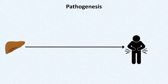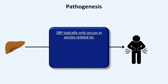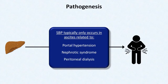SBP risk is also related to the etiology of ascites. It typically only occurs in ascites related to portal hypertension, nephrotic syndrome, and peritoneal dialysis. Peritoneal dialysis is an alternative to hemodialysis for patients with kidney failure. While it's possible for malignant ascites and other forms of ascites to become infected, it is far less common.